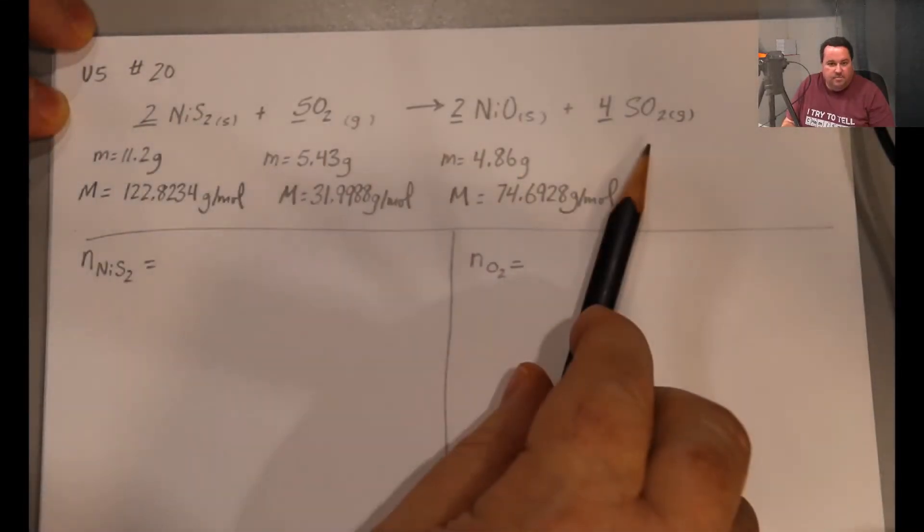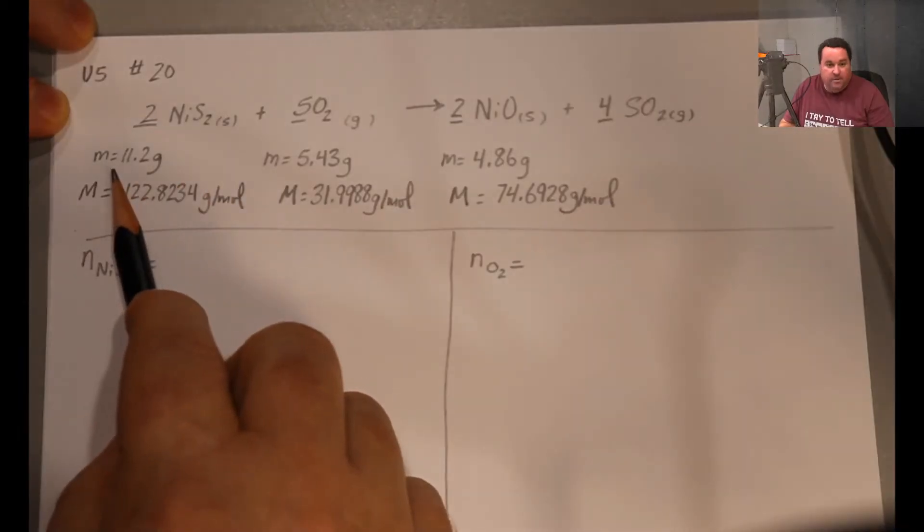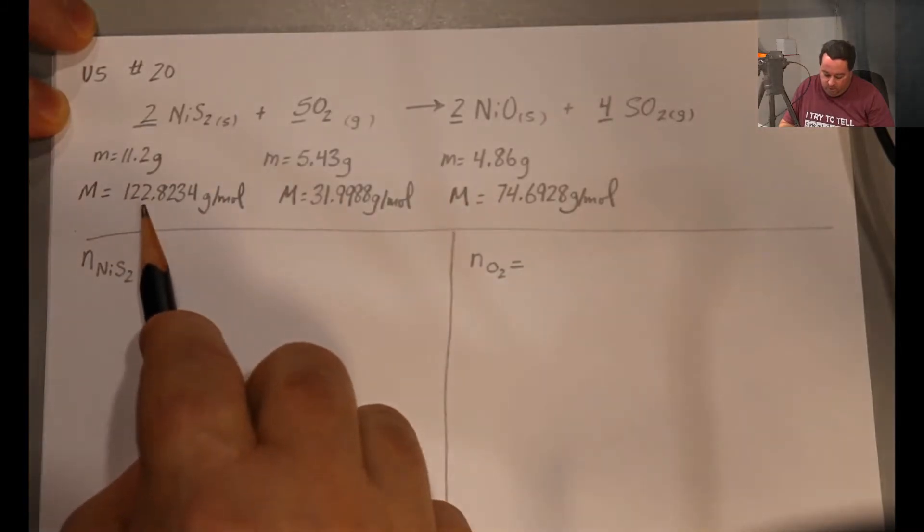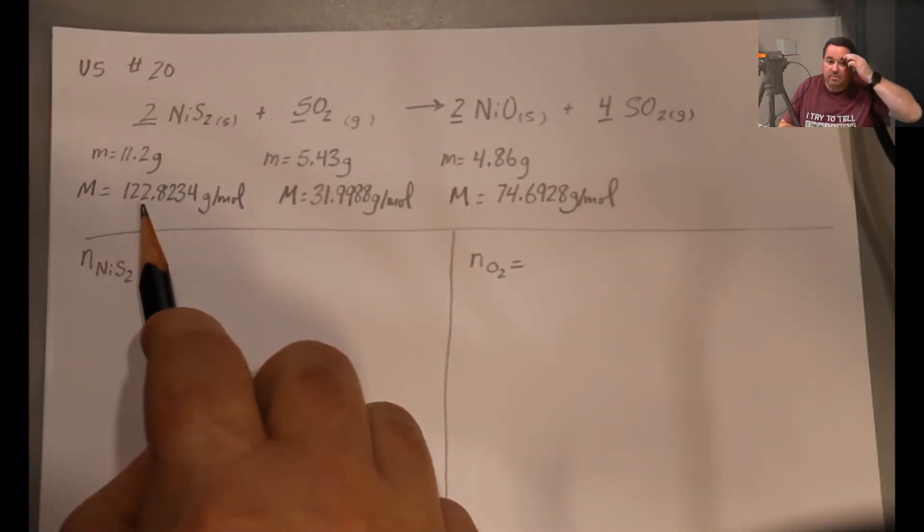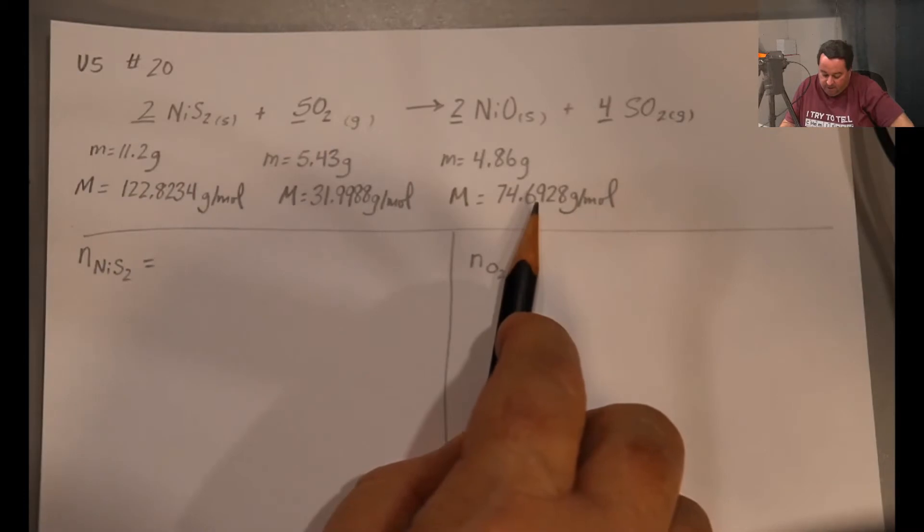I've gotten a little bit of a head start. I wrote out the equation again and I put my information underneath. I put the masses of each reactant and the product underneath the appropriate place, then I worked out the molar masses using my periodic table before I started the recording. So these were not provided in the question, so I had to work them out.